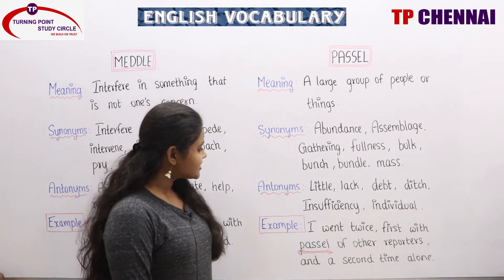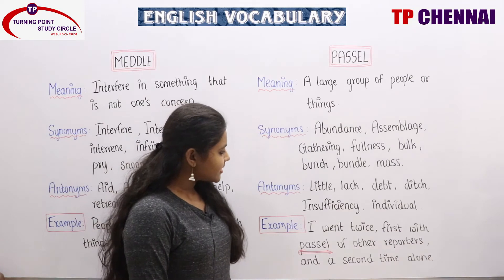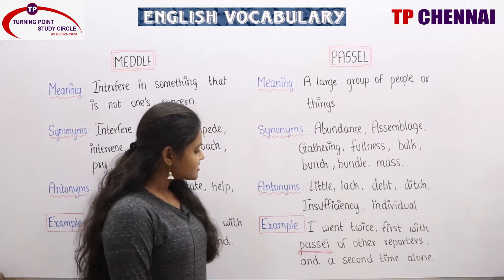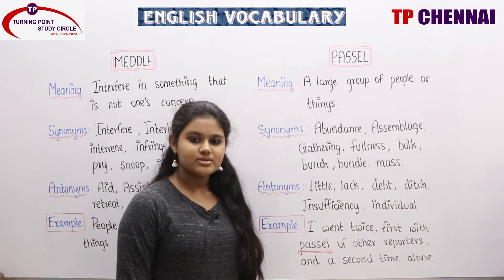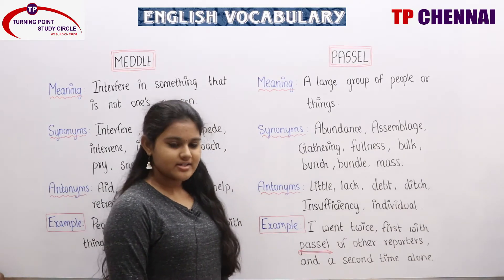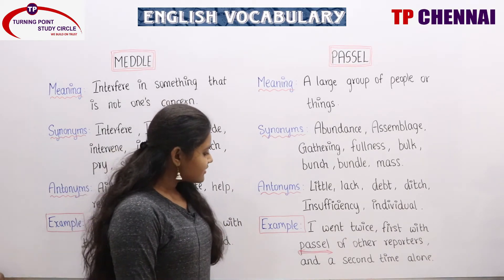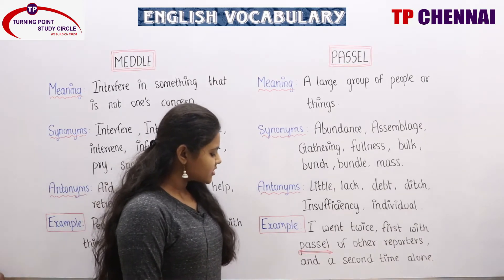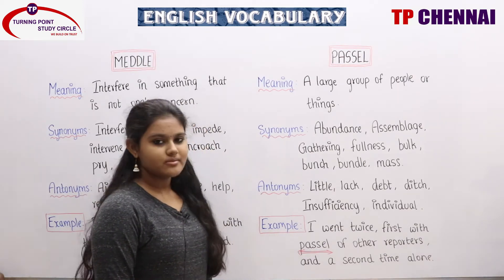Antonyms: little, lack, debt, ditch, insufficiency, individual. All these words can be related to antonyms. Example: I went twice — first with a passel of other reporters, and a second time alone.